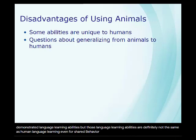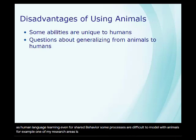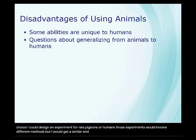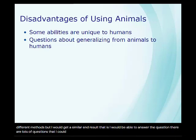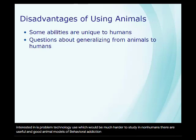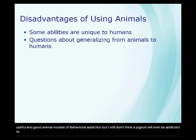Even for shared behavior, some processes are difficult to model with animals. For example, one of my research areas is probabilistic choice — I could design an experiment for rats, pigeons, or humans using different methods but get a similar end result. However, another area I'm interested in is problem technology use, which would be much harder to study in non-humans. There are useful animal models of behavioral addiction, but I still don't think a pigeon will ever be addicted to social media.